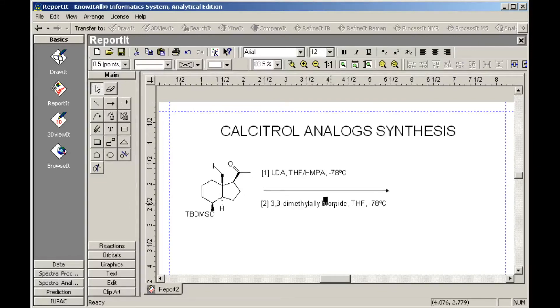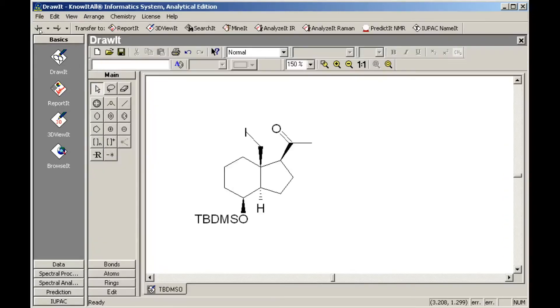To add the next structure to the reaction, we will modify the original structure in the DrawIt application. There are several ways to access tools in the DrawIt application. One of the easiest is to right-click, then select the tool pallet from the pop-up menu. You can also quickly open the tool pallet by using the Control-Right-click shortcut.